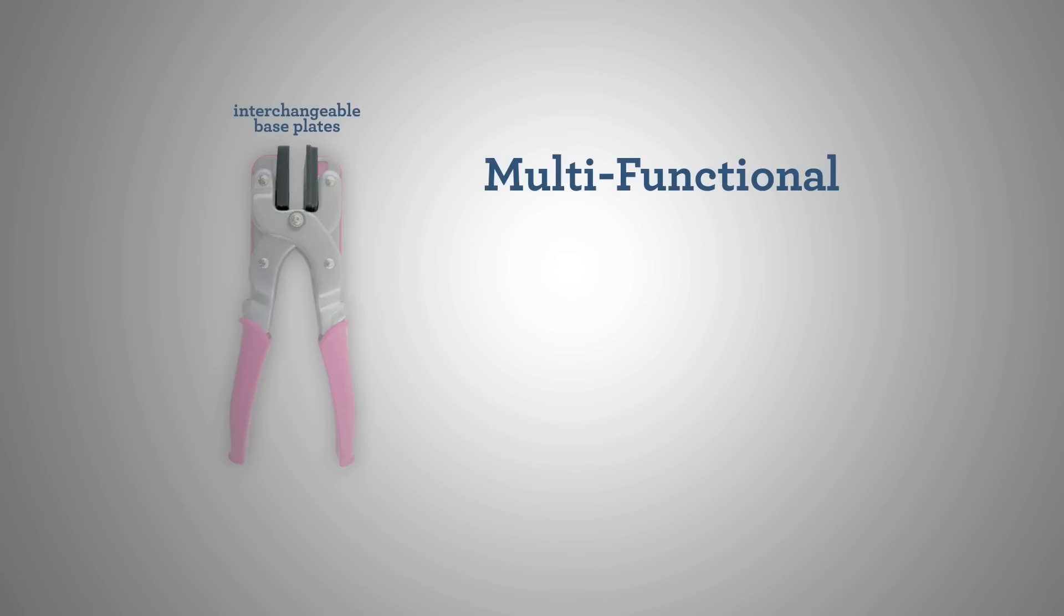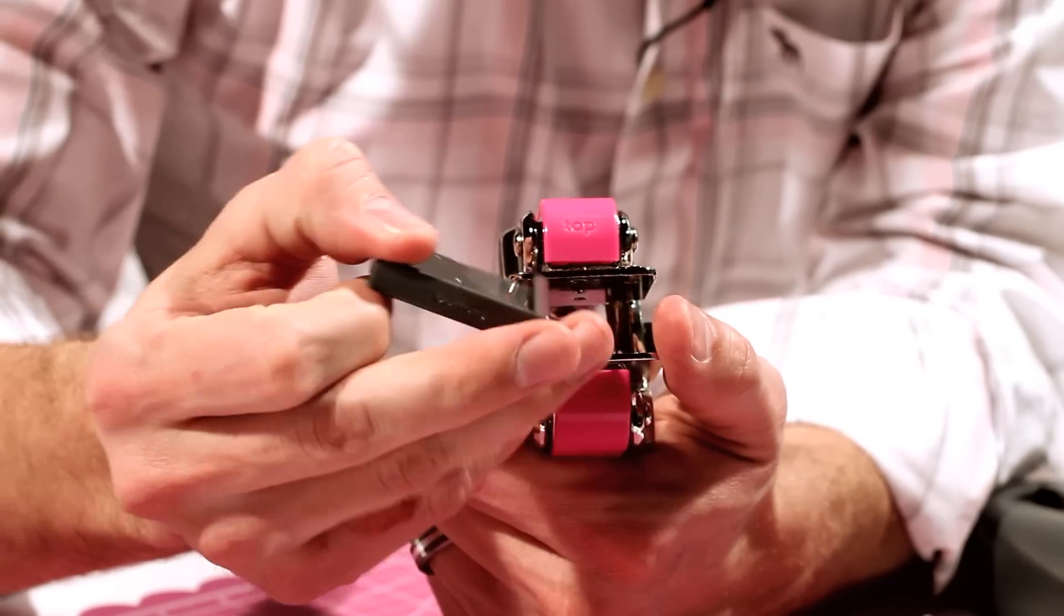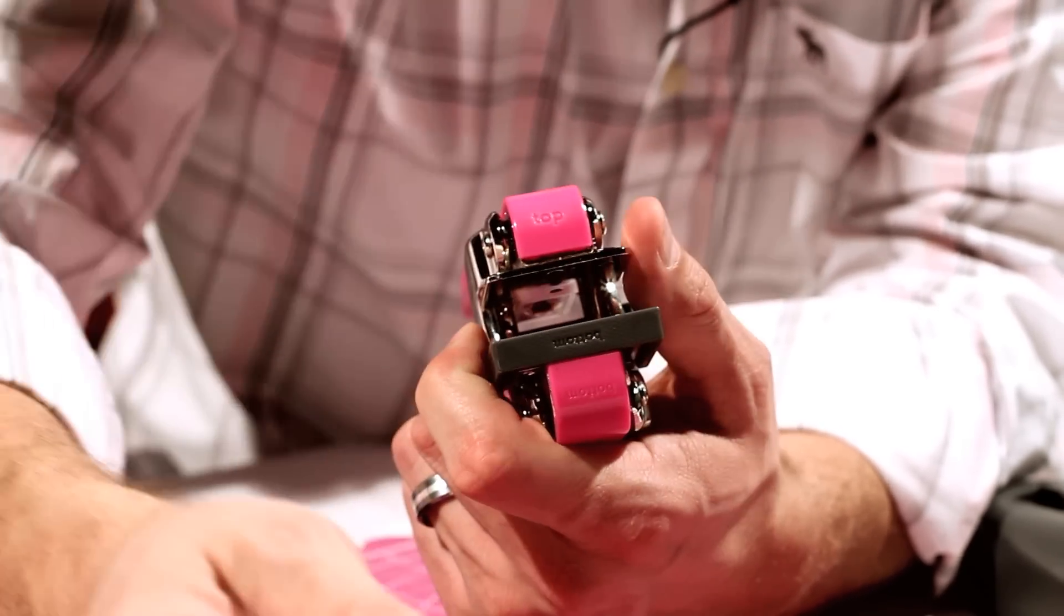By simply switching out the base plates, you can use the tool for things like die cutting, embossing, adding tabs, and setting corners. Each set of plates will have either a top or bottom designation, so before you get started, make sure your plates are connected to the tool in the right position.